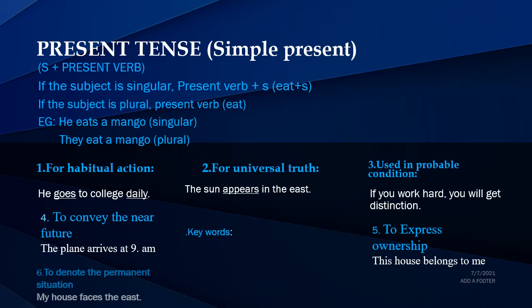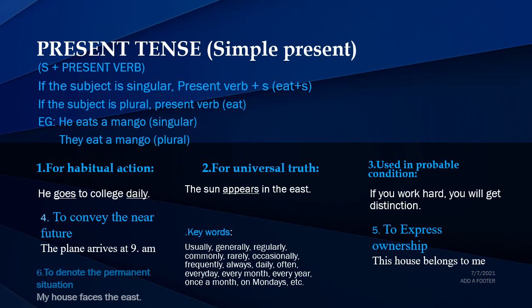Here are keywords that help identify simple present tense: usually, generally, regularly, commonly, rarely, occasionally, frequently, always, daily, often, every day, every month, every year, once a month, on Mondays. These are all examples to know whether a sentence is in simple present or not.